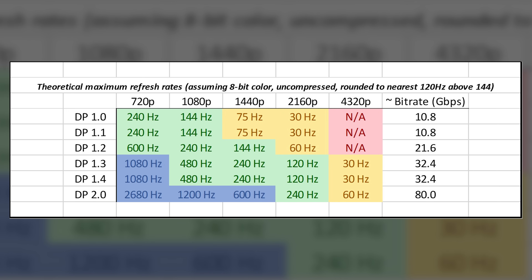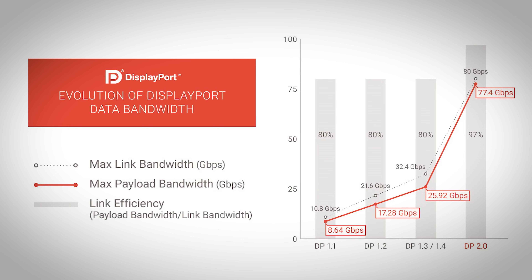To put 80 Gbps into perspective: this is significantly higher than the current HDMI 2.1 standard and allows for some crazy resolution and refresh rate combinations. You could run a single 16K monitor at 60 Hz in 10-bit with DSC, two 8K displays at 120 Hz in 10-bit with DSC, or three 4K monitors at 90 Hz apiece in 10-bit uncompressed — no DSC needed. You could theoretically hit refresh rates over 1000 Hz in 1080p and over 2000 Hz in 720p, all from a single DisplayPort connection on the back of significantly improved link efficiency, much higher than the historical 80% average.